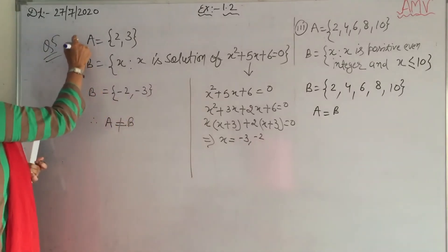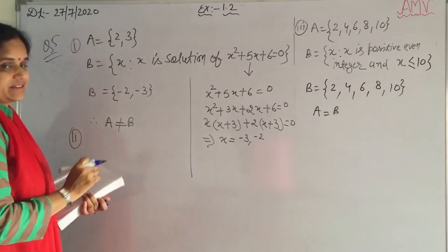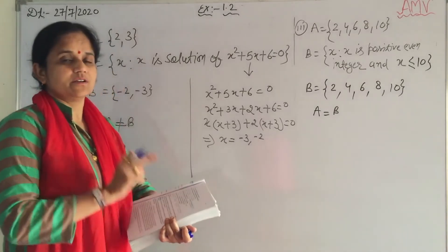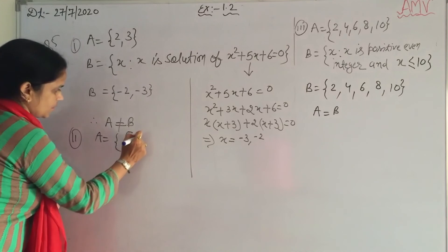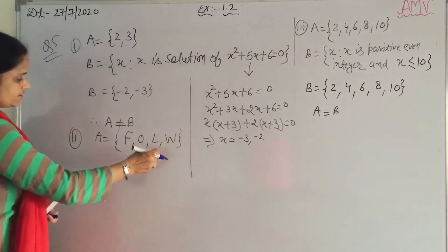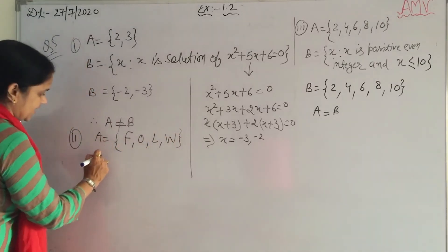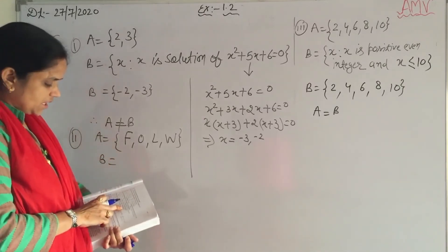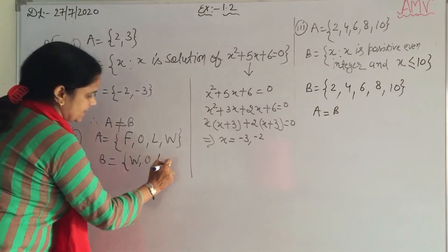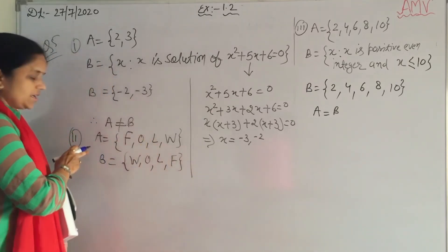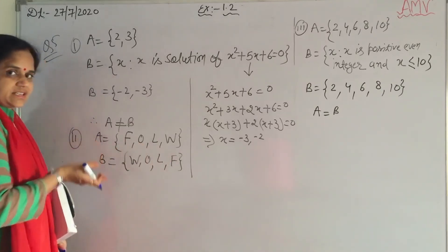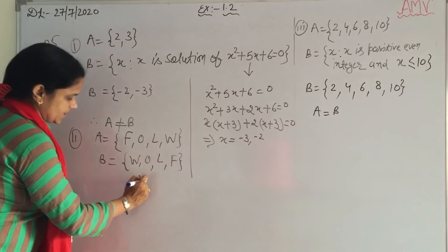Second part of question 5: A is the set of letters in the word 'follow', and B is given as {w, o, l, f}. Writing A in listing form: the letters in 'follow' are f, o, l, w — so A = {f, o, l, w}. And B = {w, o, l, f}. Both have the same and equal elements. So A is equal to B.